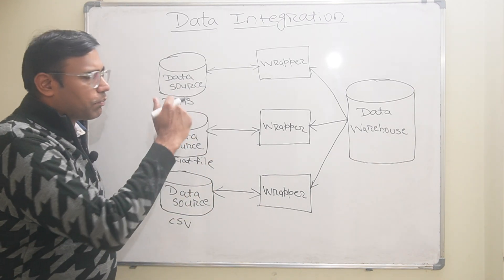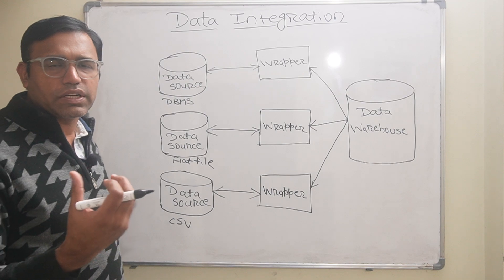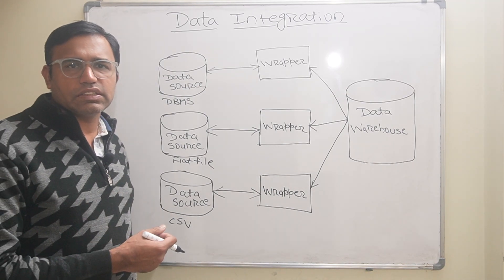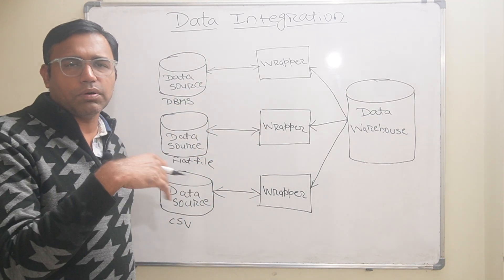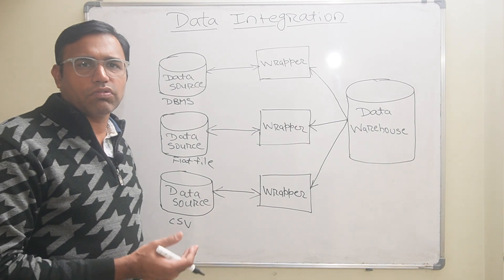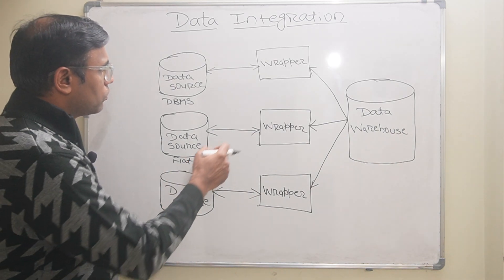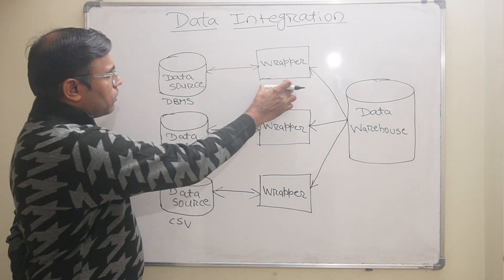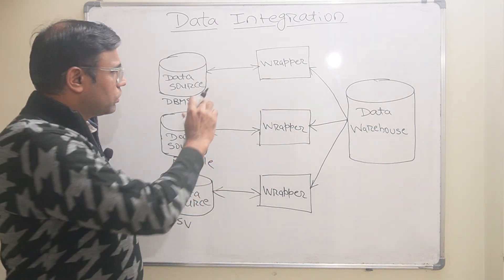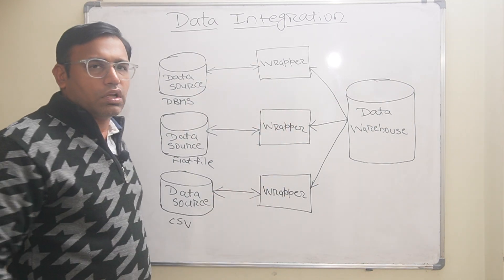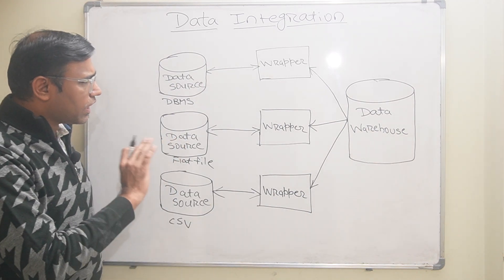Now, combining all this data at one place is data integration. There is a wrapper — what is a wrapper? A wrapper takes the query from the data integration system and converts it into the format required by the data integration system. There is one wrapper associated with one data source, so it converts the data into the required format.